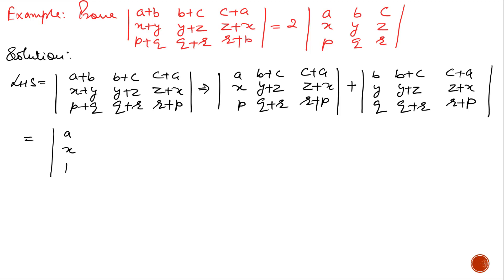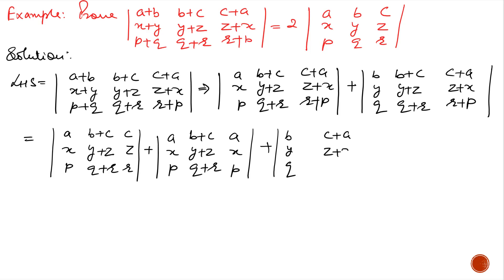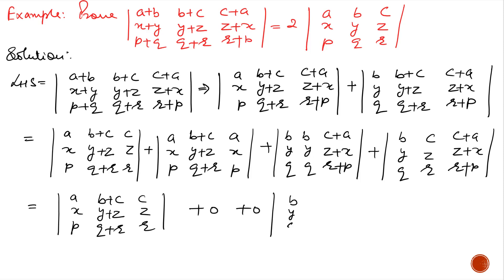Now we break the first determinant along the third column, keeping the first two columns the same. The third column has (c+a), (z+x), (r+p), so c, z, r go in the first determinant and a, x, p in the second. Similarly in the second determinant we break the second column, keeping the first and third columns the same. We get b, y, q in the first and c, z, r in the second. The second determinant equals 0 because c1 equals c3, and the third determinant equals 0 because c1 equals c2.